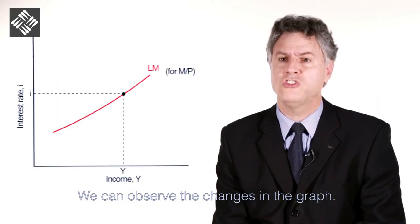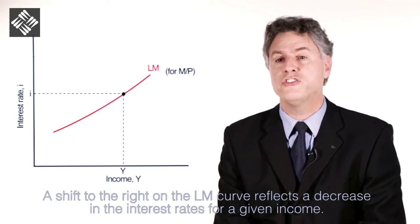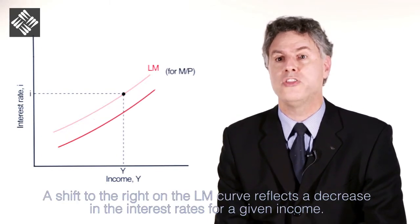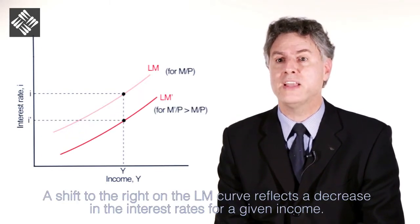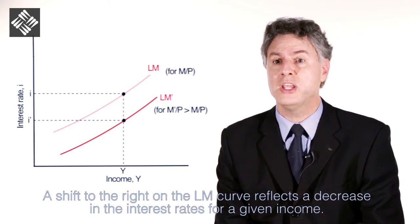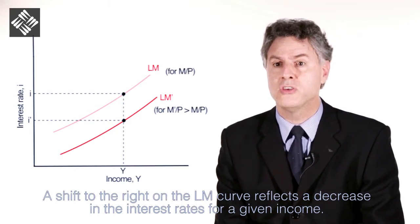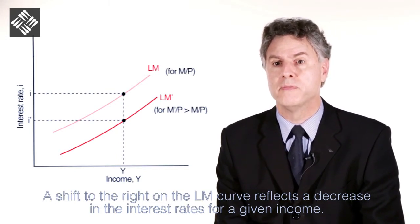We can observe this change in the graph. A shift to the right on the LM curve reflects a decrease in the interest rates for a given income.